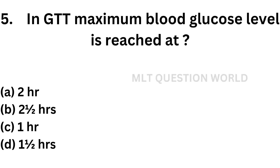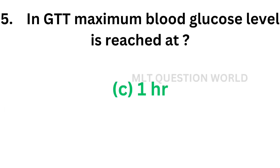Question number 5. In glucose tolerance test, maximum blood glucose level is reached at: option A, 2 hours; option B, 2.5 hours; option C, 1 hour; option D, 1.5 hours. The correct answer is option C, 1 hour. The maximum blood glucose level is reached at 1 hour in GTT.